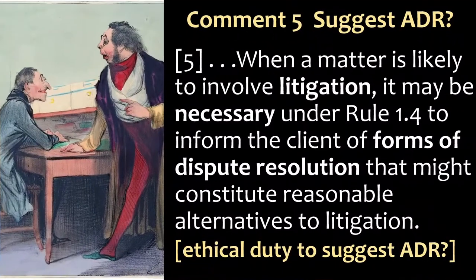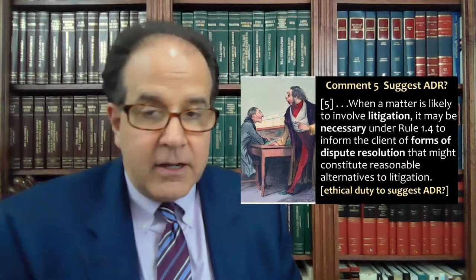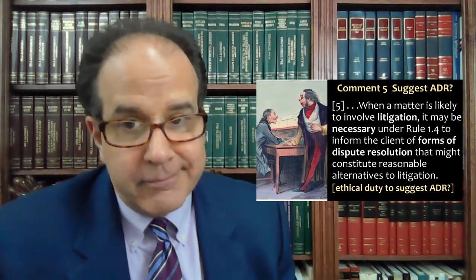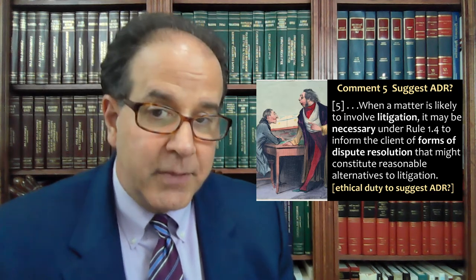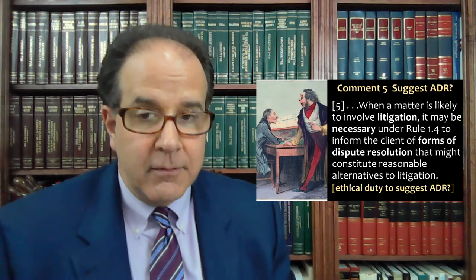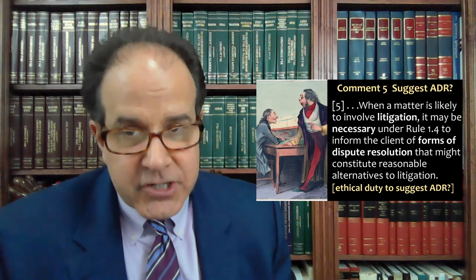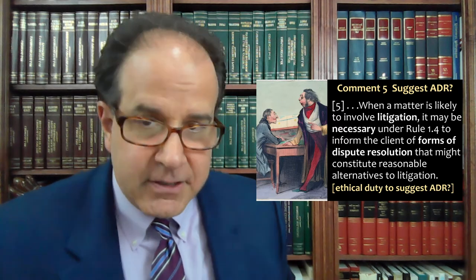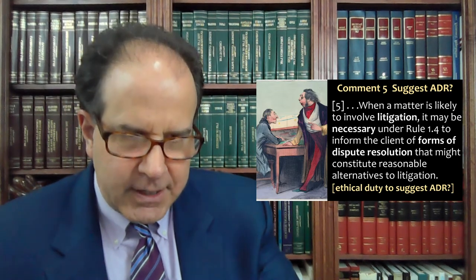In litigation, we have some special concerns. Comment five talks about when a matter is likely to involve litigation: it may be necessary under Rule 1.4 — our duty to communicate — to inform the client of forms of dispute resolution that might constitute reasonable alternatives to litigation. This suggests there could be an ethical duty to tell your client about arbitration or mediation as a way to minimize costs, inconvenience, and headaches, even though they came to you expecting to litigate. You may have a duty to talk to them about some of those other options.